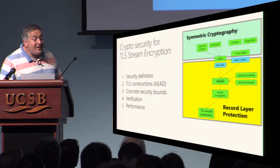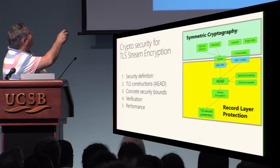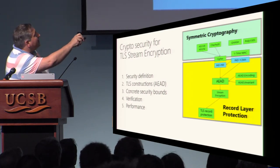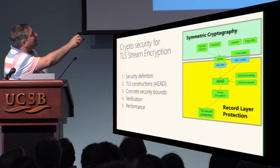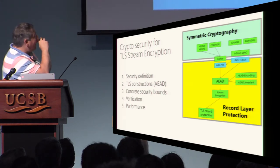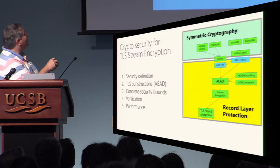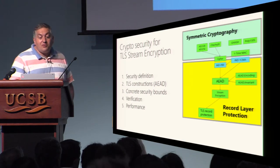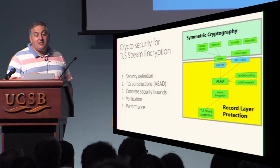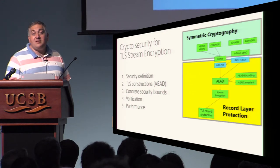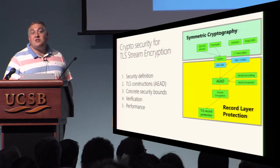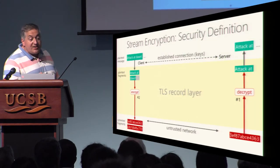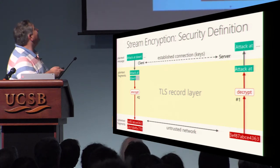In our implementation we build the top-level interface using nested modules that implement one new feature at a time: sequences of multiple streams driven by the handshake, multiplexing of contents within each stream with padding and length hiding, then stream encryption with packet numbers, then authenticated encryption with additional data, and below that multiplexing on the choice of PRF and MAC algorithm. That's the last thing I'll describe in detail. We want to verify and implement stream encryption for TLS, which involves some symmetric crypto as well as a few modules for the record layer.